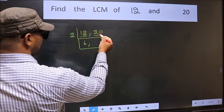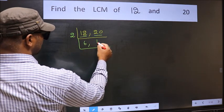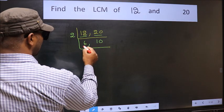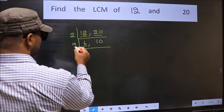Now the other number 20. When do we get 20 in 2 table? 2, 10, 20. Now here we have 6. 6 is 2, 3, 6.